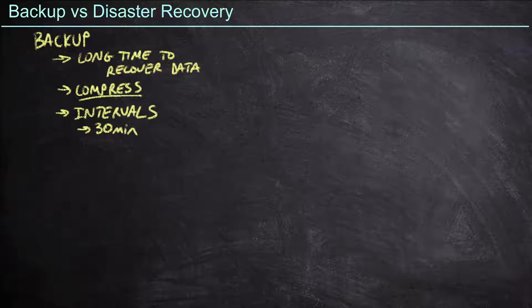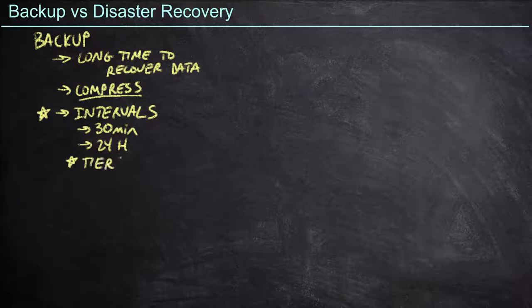In other cases, we might only be taking backups every 24 hours. So we have to be concerned about how often we're taking those backups if we're going to use them to recover in the event of a disaster. This should come back to the idea of application tiers, because if we have a tier one application and we're only taking 24-hour backups, that's probably not the right interval to be assigning to that particular tier.